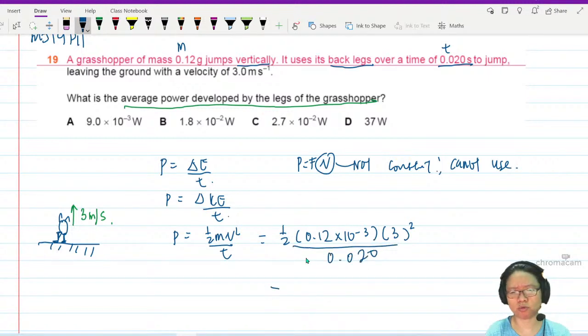That's it for my Jiminy Cricket the grasshopper. Let me press my calculator. This shows me that my good friend has 2.7 times 10 to the power of negative 2 watts. Yes, the answer is C.